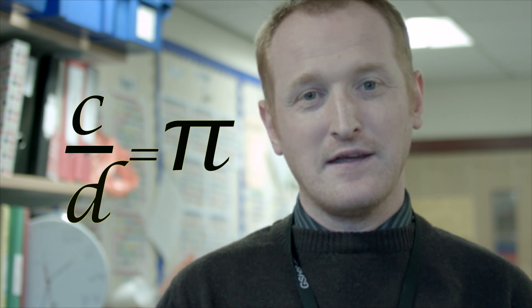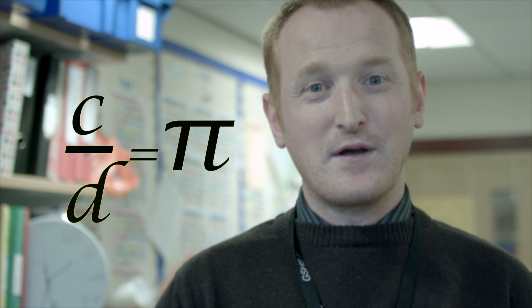Pi comes from the relationship between the circumference and the diameter of a circle. When we do circumference divided by the diameter, we get Pi.